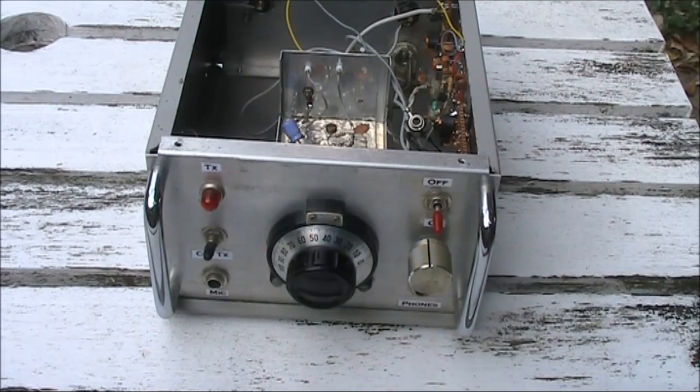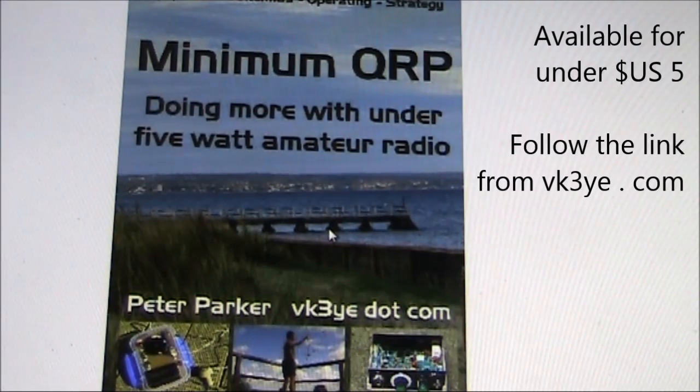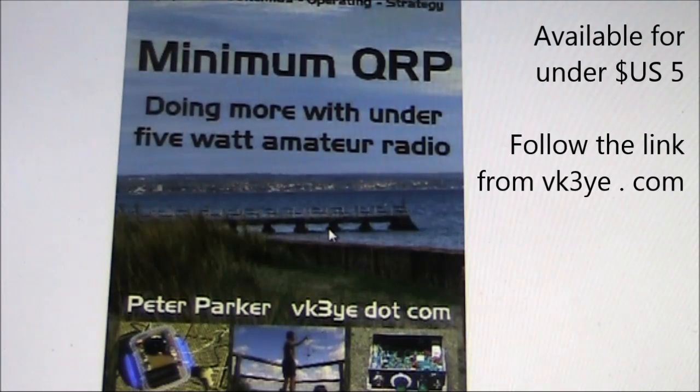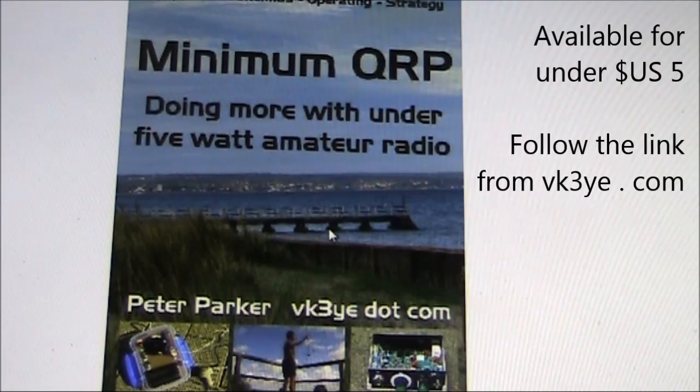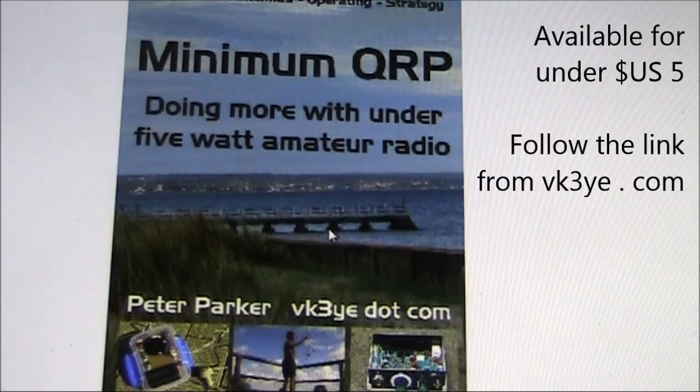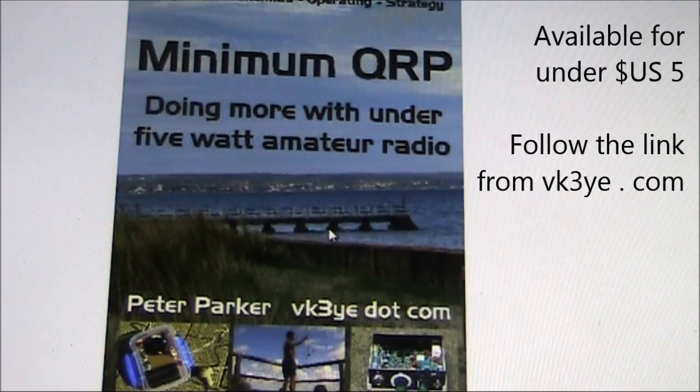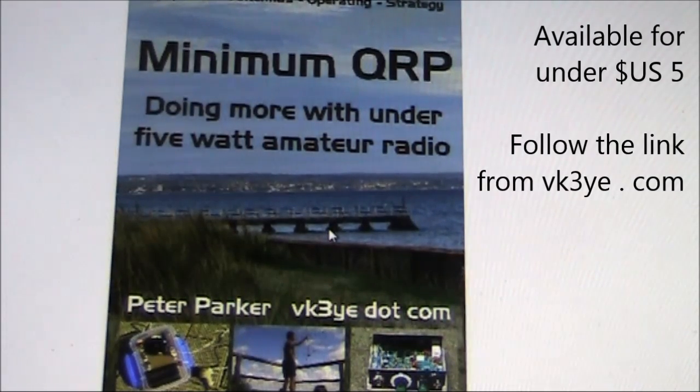The receiver is now a genuine pleasure to use, and a transmitter section can now be contemplated. Just a reminder that if you're looking for a comprehensive operating manual on all aspects of low power amateur radio, don't go past minimum QRP. Available from Amazon for under US$5. For more information, go to vk3ye.com and follow the link, or go to Amazon and type in minimum QRP.